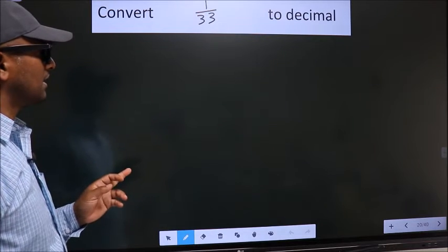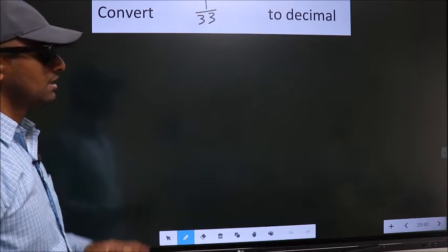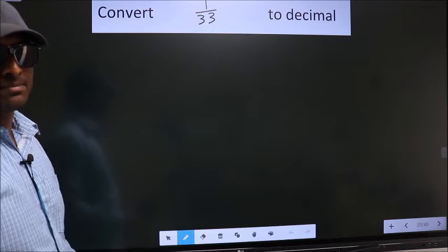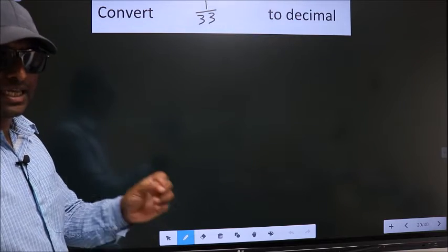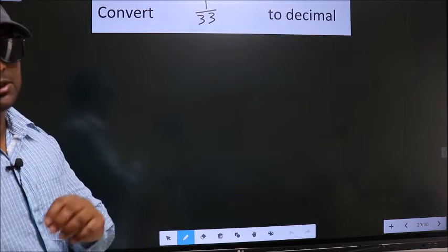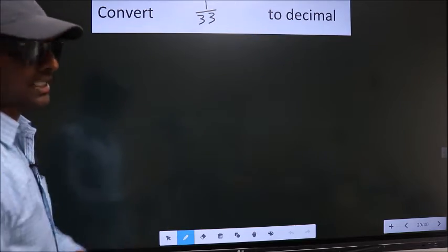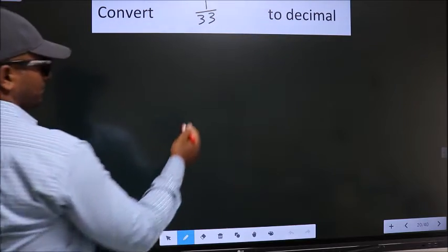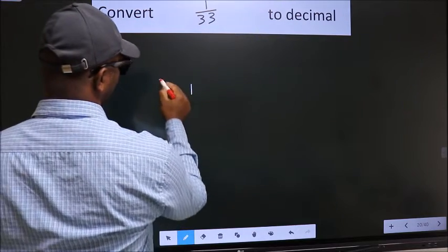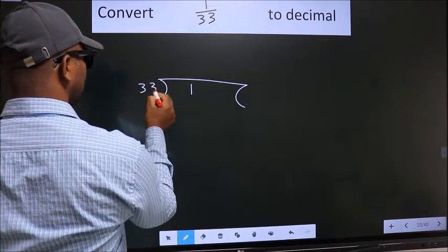Convert 1 by 33 to decimal. To convert this to decimal we have to divide, and to divide we should frame it in this way: 1 here, 33 here.